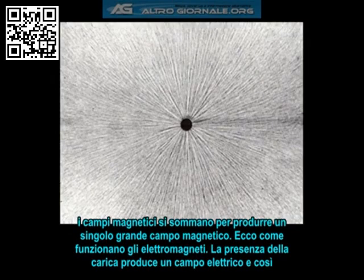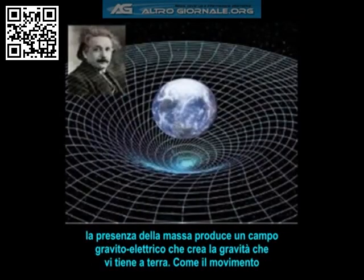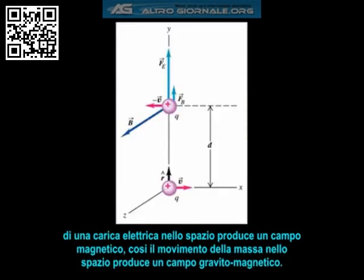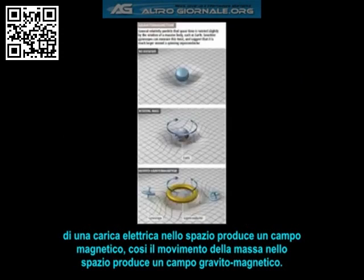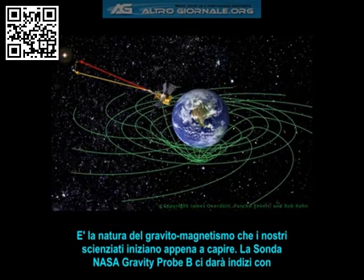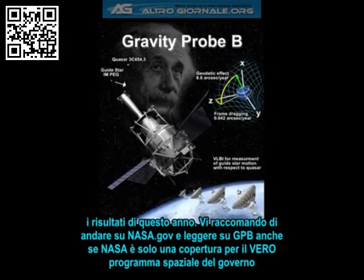Just as the presence of charge creates an electric field, the presence of mass produces a gravitoelectric field, which creates the gravity that keeps us grounded to this giant chunk of space rock. So just as the motion of an electric charge through space produces a magnetic field, the motion of a mass through space creates a gravitomagnetic field. It is the very nature of gravitomagnetism which our scientists are just beginning to understand. NASA's Gravity Probe B will likely give us some clues once the results come back later this year.